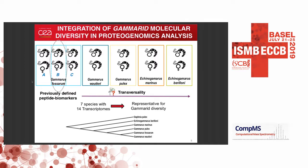The gammarid biodiversity found in Europe includes Gammarus fossarum with subtypes A, B, and C; Gammarus varriatus and Gammarus pulex, which cannot be reliably distinguished by physiological properties alone and require genotyping. The other species, Echinogammarus marinius and Echinogammarus berylloni, are less complicated to distinguish. We want to know if biomarkers previously defined on Gammarus fossarum B are applicable to all other species in Europe.